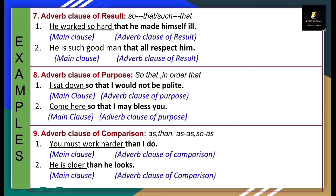Ninth type: adverb clause of comparison. Denoted by: as...as, than, so...as. Example: 'You must work harder than I do.' 'You must work harder' is the main clause. 'Than I do' is the adverb clause of comparison — a comparison between you and I. Another example: 'He is older than he looks.' 'He is older' is the main clause, and 'than he looks' is the adverb clause of comparison using the comparative form 'older'.